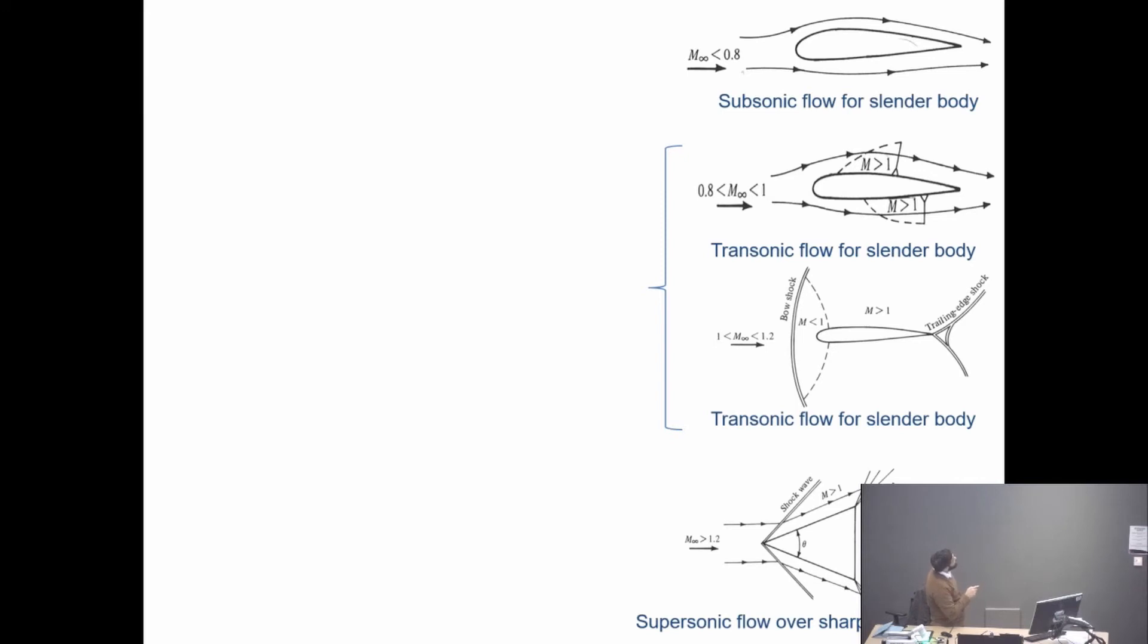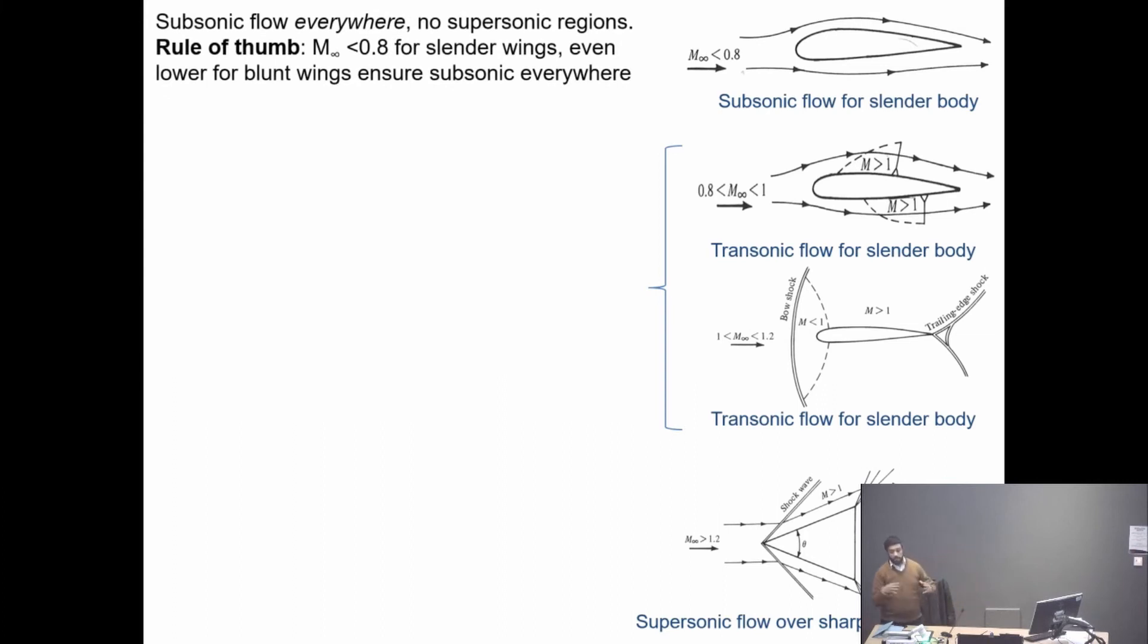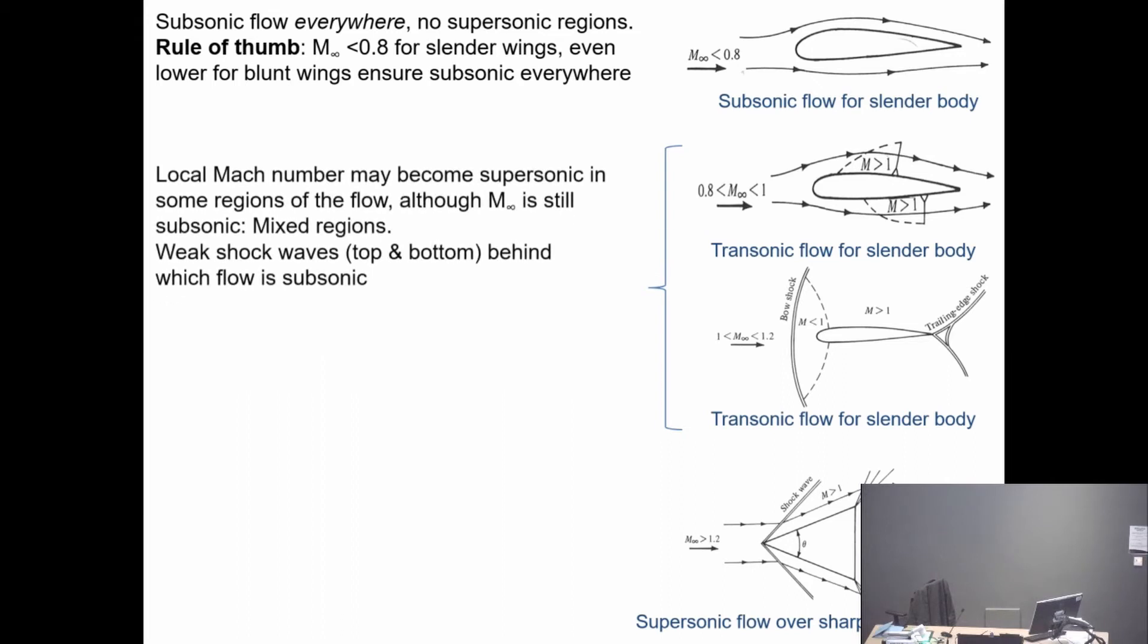Let's consider a typical subsonic airfoil. The free stream Mach number is less than 1. For this shape, do not necessarily expect the same results at the same Mach number for different airfoils - they will be slightly different. But for example, as long as the Mach number for a typical subsonic airfoil is less than 0.8, the flow remains subsonic all over the region of interest.